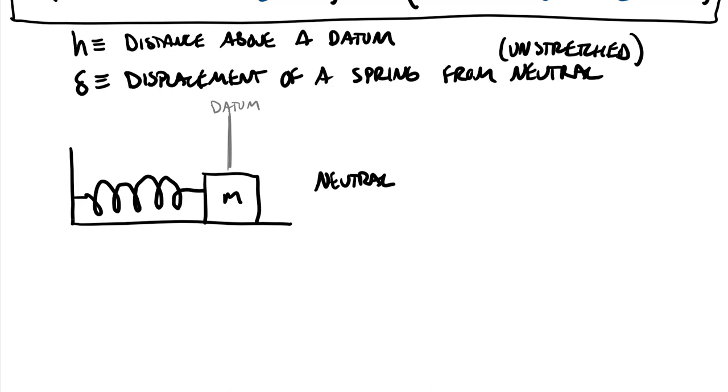And so if we apply our elastic potential energy equation of one half k times delta squared, it's gonna equal zero. And the reason it equals zero is because delta equals zero. And just also a reminder that k is a force per length. Okay it's called a spring constant.